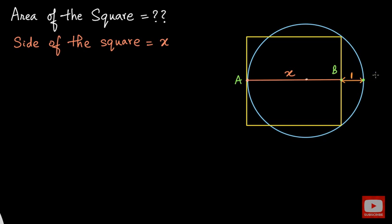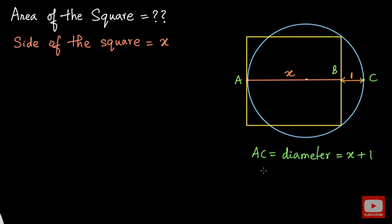Now let me name this point as C here. As you can see from the figure, this length AC is nothing but the diameter of the circle. So AC is the diameter, and from the figure we can see that the length of AC is x plus 1. So the diameter is equal to x plus 1, and therefore the radius of the circle will be half of this — that is, x plus 1 divided by 2.